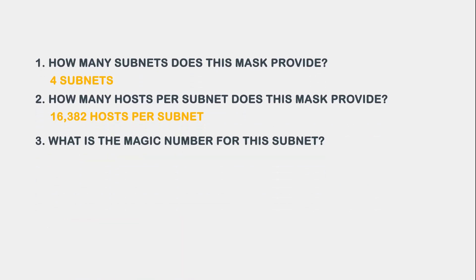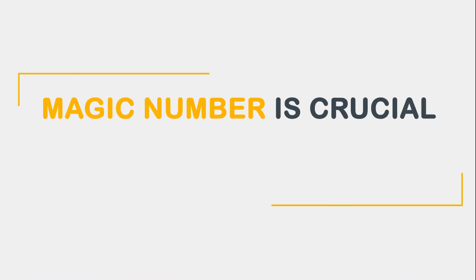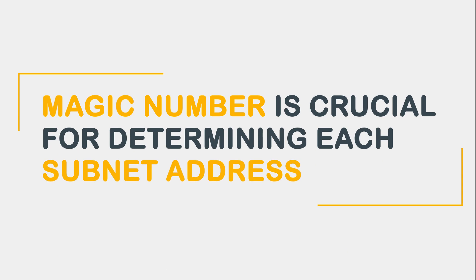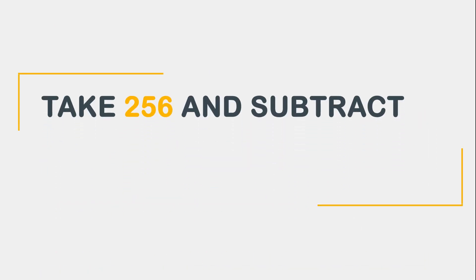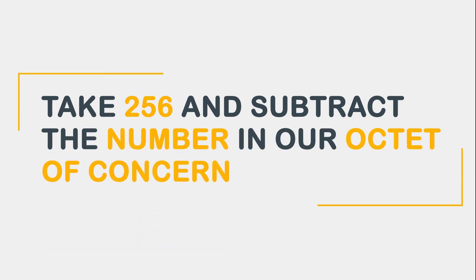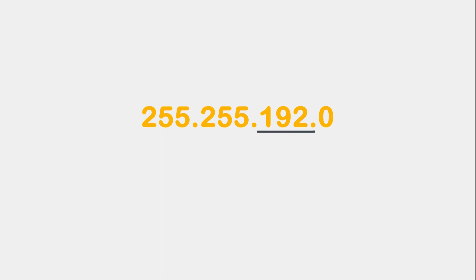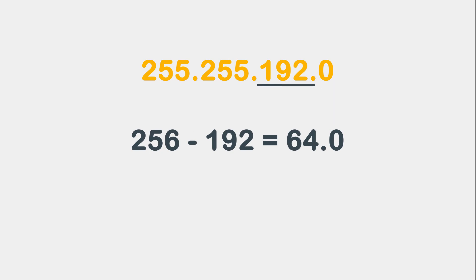Question 3 asks: What is the magic number for this subnet? The magic number is crucial for determining each subnet address. To calculate the magic number, we take 256 and subtract the number in our octet of concern. In this example, the number in our octet of concern is 192. So our answer to question 3 is 256 minus 192, which is 64.